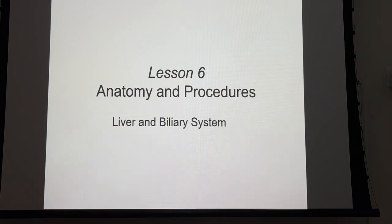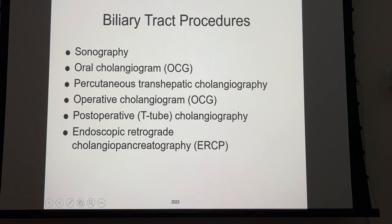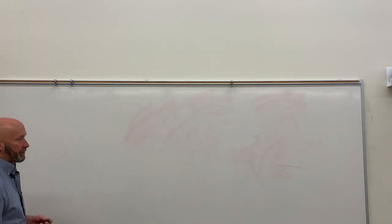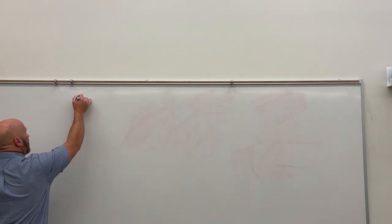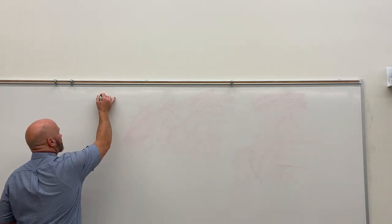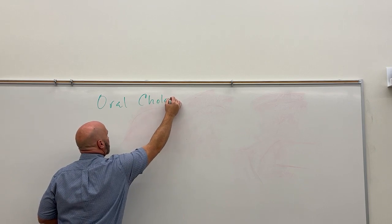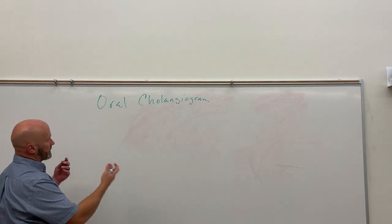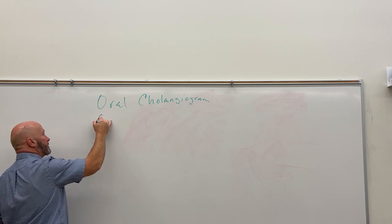If you flip over to page 272, we get into the actual exam. I'm going to draw some of these out and bring the lights back up and talk about the exam types. We have a number of different exam types of the biliary system. We have one that's really kind of archaic and you're probably never going to see it, but we're going to talk about it because there's an important distinction between two exams that are abbreviated exactly the same. We have oral cholangiogram, and we also have operative cholangiogram.